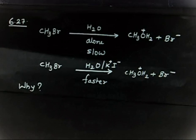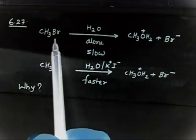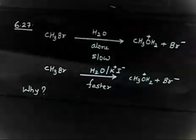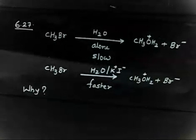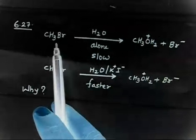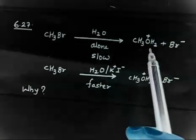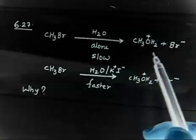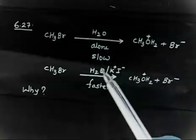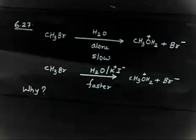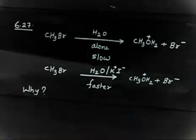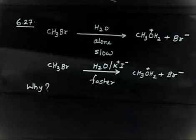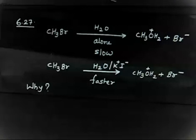Let us discuss. So this says, if you treat CH3Br — that is a primary alkyl halide, methyl bromide — with H2O alone, no catalyst, just hydrolysis: Br goes and H2O attacks via SN2 mechanism. If you lose H+ in the next step, you will have CH3OH, that is methanol. So this is a hydrolysis reaction. Hydrolysis of CH3Br in the presence of H2O — this reaction is slow.